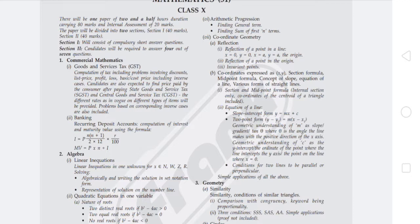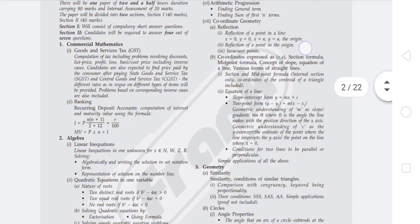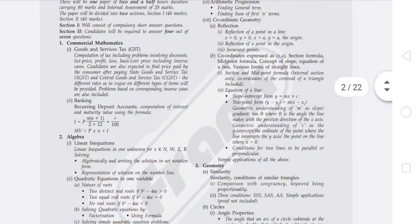There will be one paper of two and a half hours duration carrying 80 marks and internal assessment of 20 marks. The paper will be divided into two sections: Section 1, 40 marks and Section 2, 40 marks. Section 1 will consist of compulsory short answer questions. In Section 2, candidates will be required to answer 4 out of 7 questions.